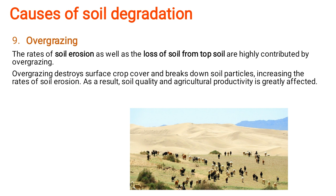Overgrazing is another aspect. When there are imbalances in vegetation — when we allow overgrazing — there will be losses of vegetation, which will result in accelerated soil erosion. Therefore, everything has to be maintained in a balanced manner.